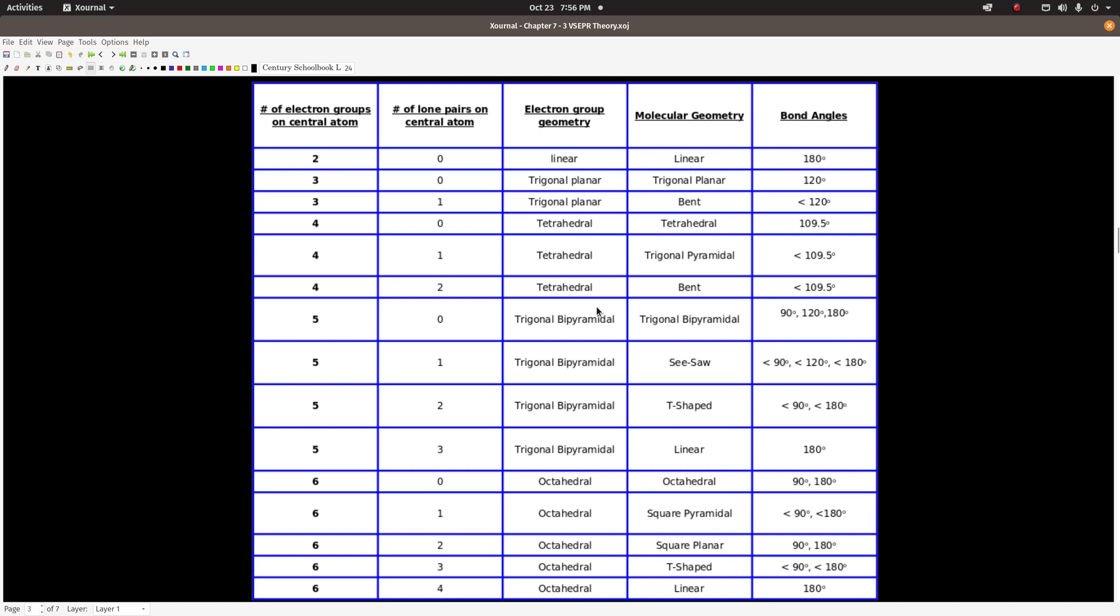Just to remind you guys, electron group geometry is the arrangement of all the electron groups—lone pairs and bond pairs combined—and these are just basic shapes: linear, trigonal planar, tetrahedral, trigonal bipyramidal, or octahedral.